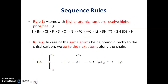For assigning R&S configuration, we have to follow sequence rules. Rule 1: atoms with higher atomic number receive higher priority. For example, iodine gets higher priority over bromine, bromine gets higher priority over chlorine, and so on.